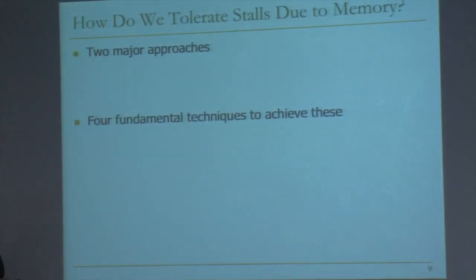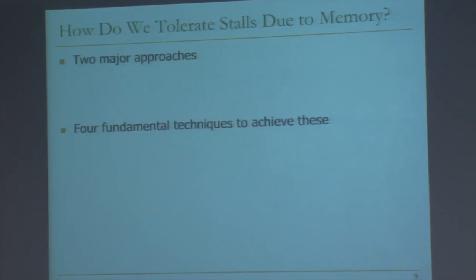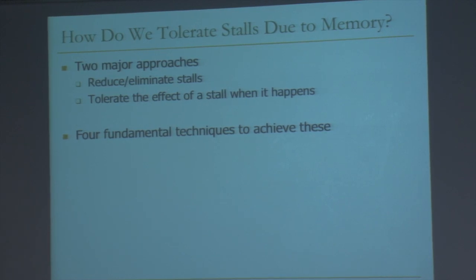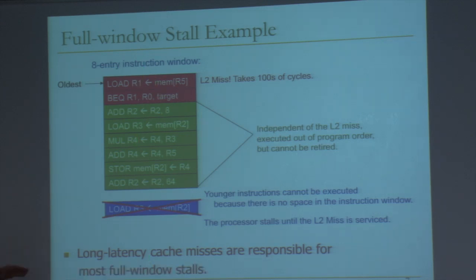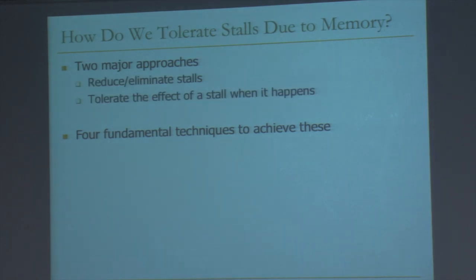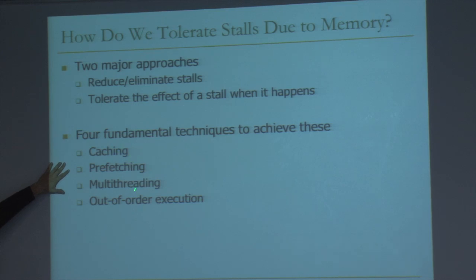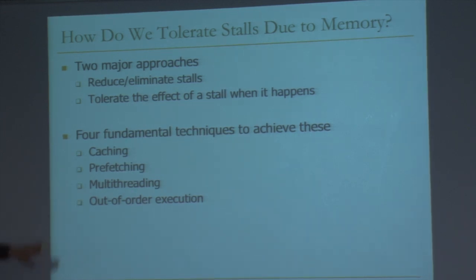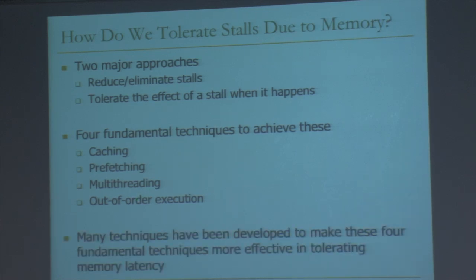So how do we actually tolerate these stalls due to memory and reduce the fraction of time stalling? There are two major approaches: we could reduce or eliminate these stalls by prefetching, or we could tolerate the effect of a stall when it happens. The line between these is sometimes blurry. For example, out-of-order execution tolerates the effect of a stall — it doesn't prevent the stalls. When you stall for a long latency cache miss, if you have enough window entries, you tolerate the effect by overlapping other long latency cache misses with it.